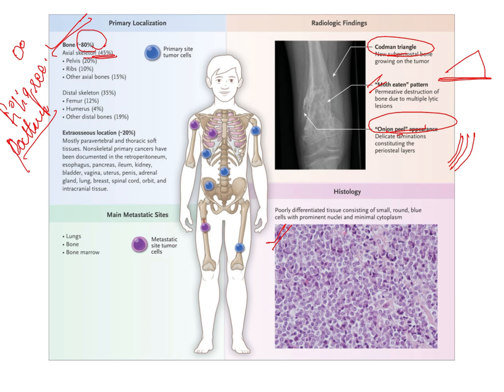Histologically, when these round small blue cells are present within the bone, the intraosseous component is called Ewing sarcoma. However, if the entire tumor originates purely from soft tissues outside the bone with no localization within bone, it is then called PNET — peripheral neuroectodermal tumor — which is the soft tissue counterpart of Ewing sarcoma. This distinction can be asked as an MCQ.